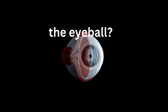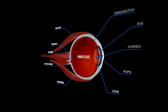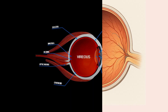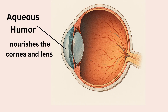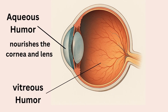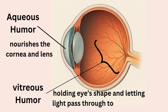Inside your eye, two special fluids keep things in balance. The aqueous humor, a clear liquid in the front, nourishes the cornea and lens while keeping the eye's pressure just right. Behind the lens, the vitreous humor — a jelly-like substance — fills most of the eye, holding its shape and letting light pass through to the retina. Together, they're like the eye's support team, ensuring clear vision.